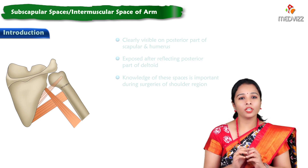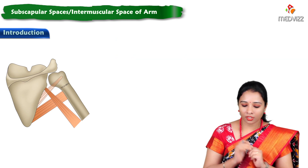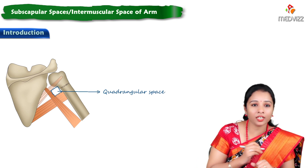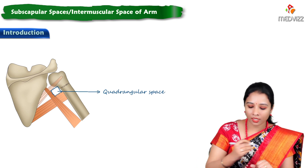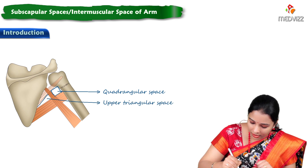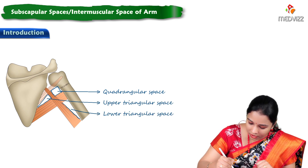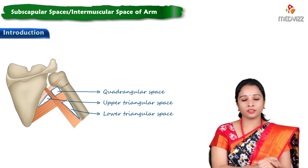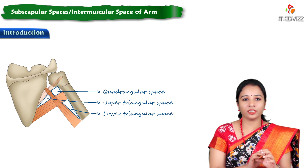So what are these spaces? You can see three gaps here. This is called the quadrangular space, this is the upper triangular space, and this is the lower triangular space. You can see three spaces clearly.